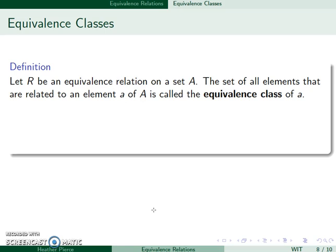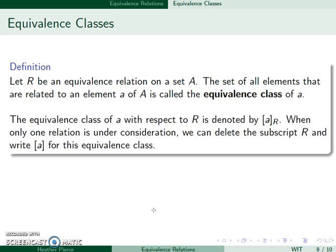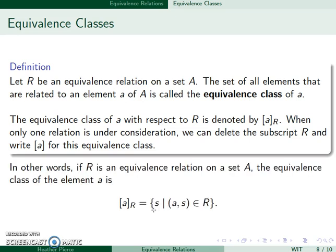We also have the concept of equivalence classes. If we have an equivalence relation, the set of all elements that are related to an element little a in A is known as the equivalence class of A. The equivalence class of A with respect to R is denoted A sub R, and when only one relation is under consideration, we may delete the subscript and just write [A] — the set of all elements S such that (A, S) is in R.